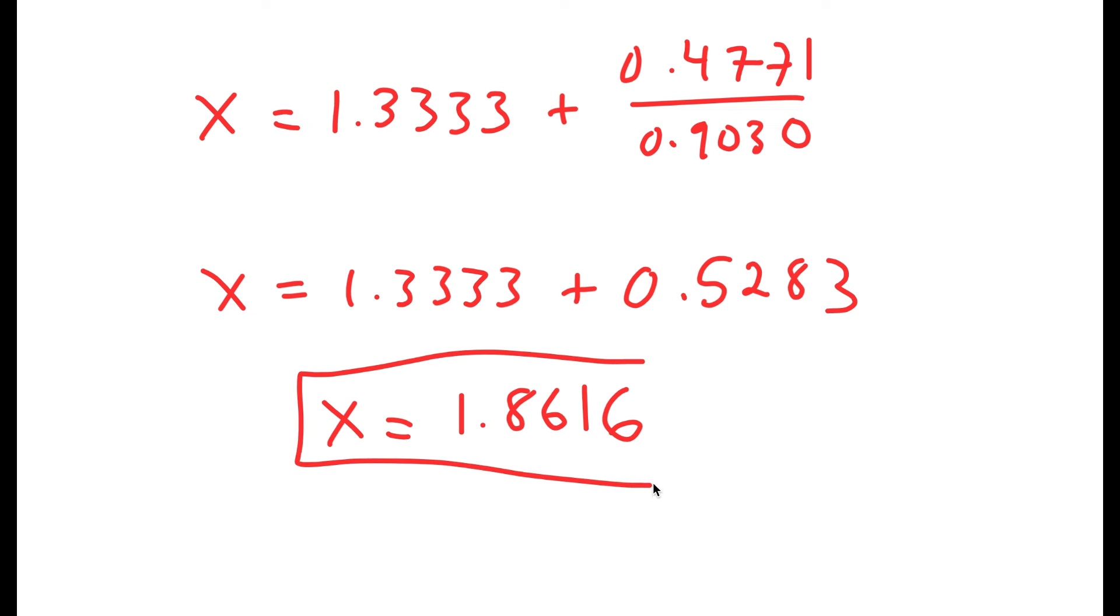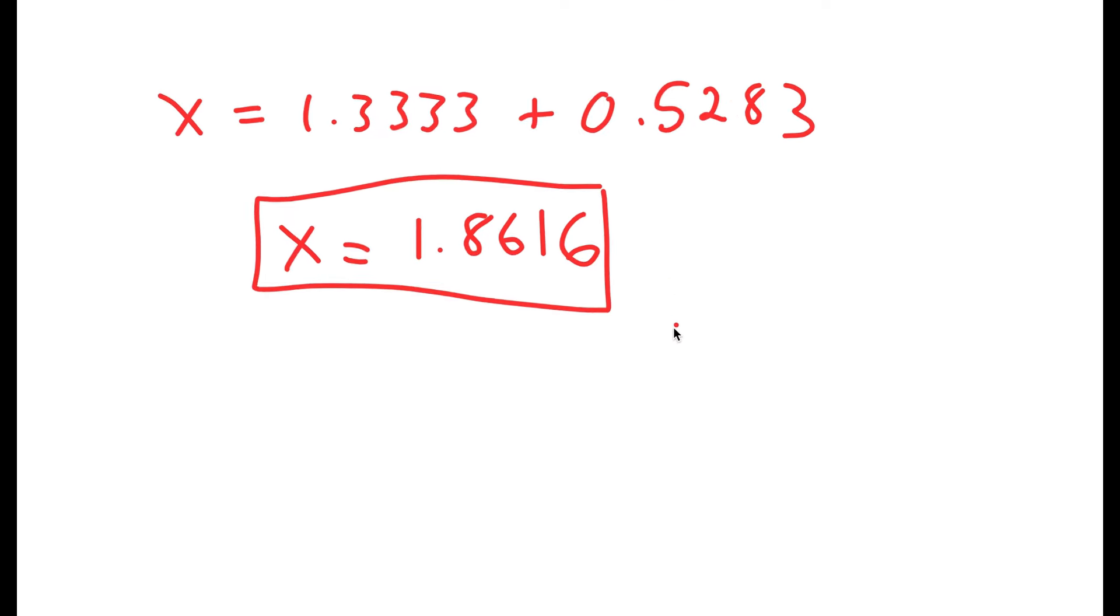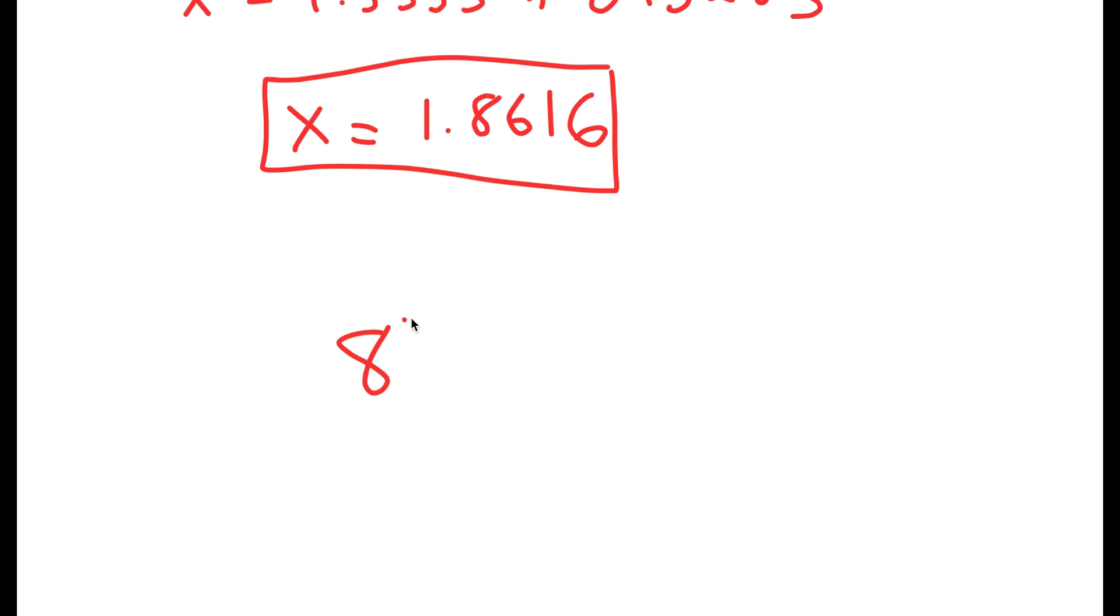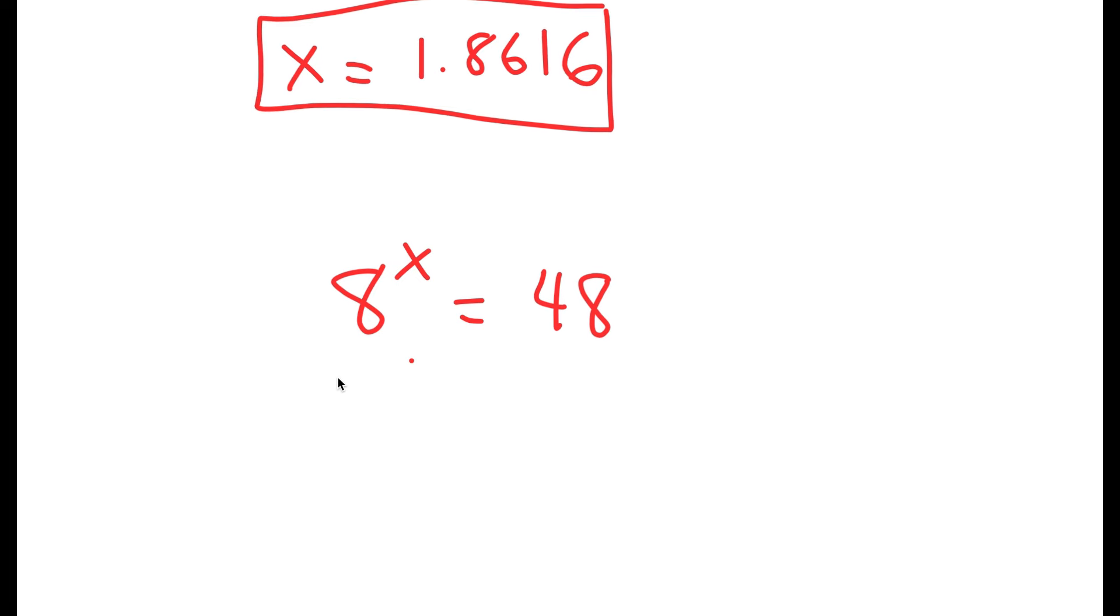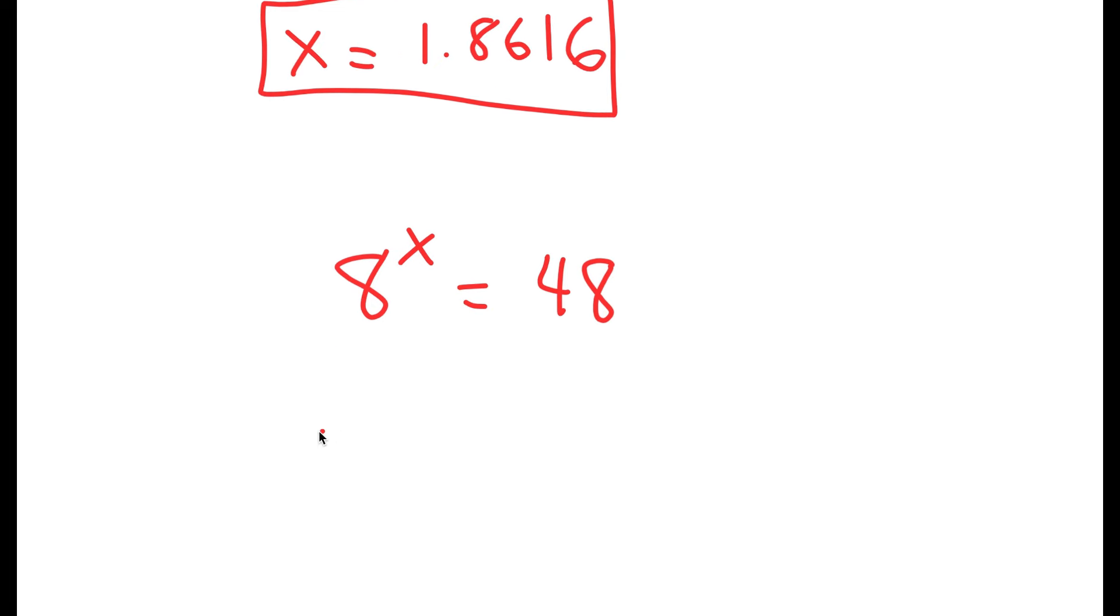So this is my solution to this equation. And what we can do is we can also plug this in and check. So my equation was 8 to the power of x equals 48. And if I use a calculator and do 8 to the power of our solution, which is 1.8616, the calculator says that 8 to the power of 1.8616 is equal to 47.99, which is estimated to be 48 if it rounds up. So this is the right solution.